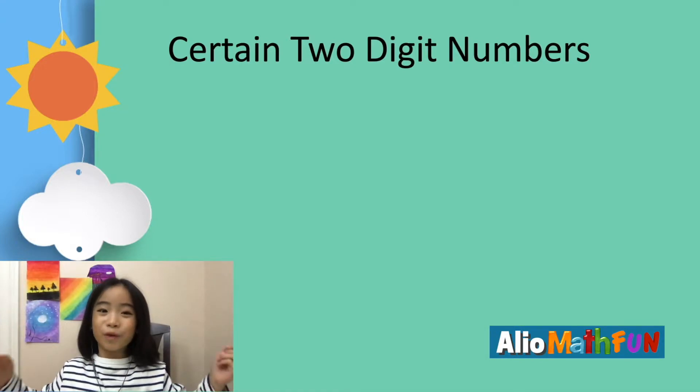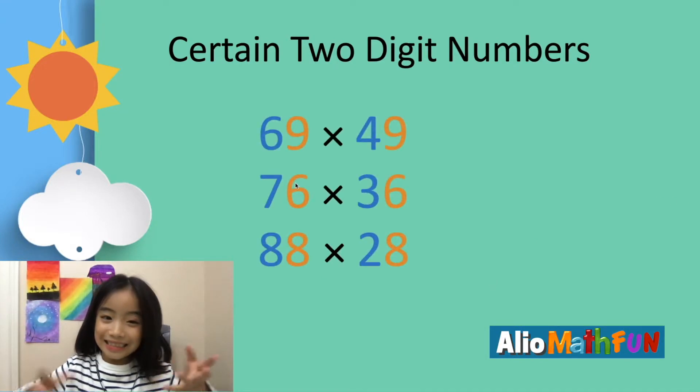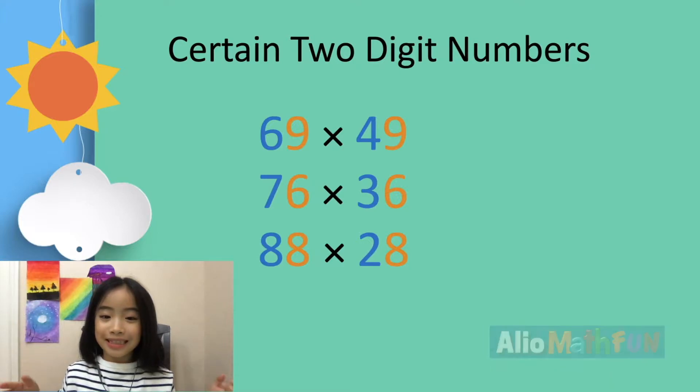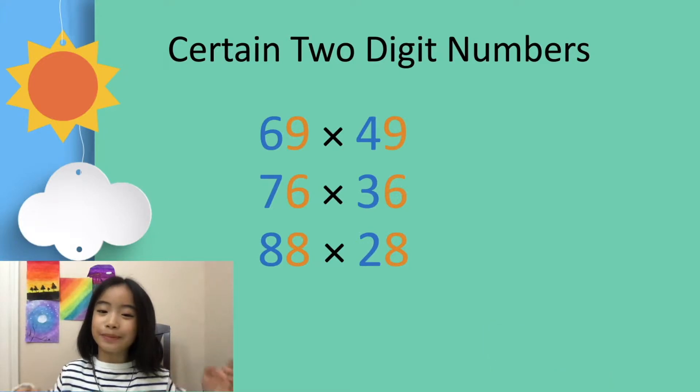This trick works for certain two-digit numbers. As you can see, it works for 69 times 49, 76 times 36, and 88 times 28.